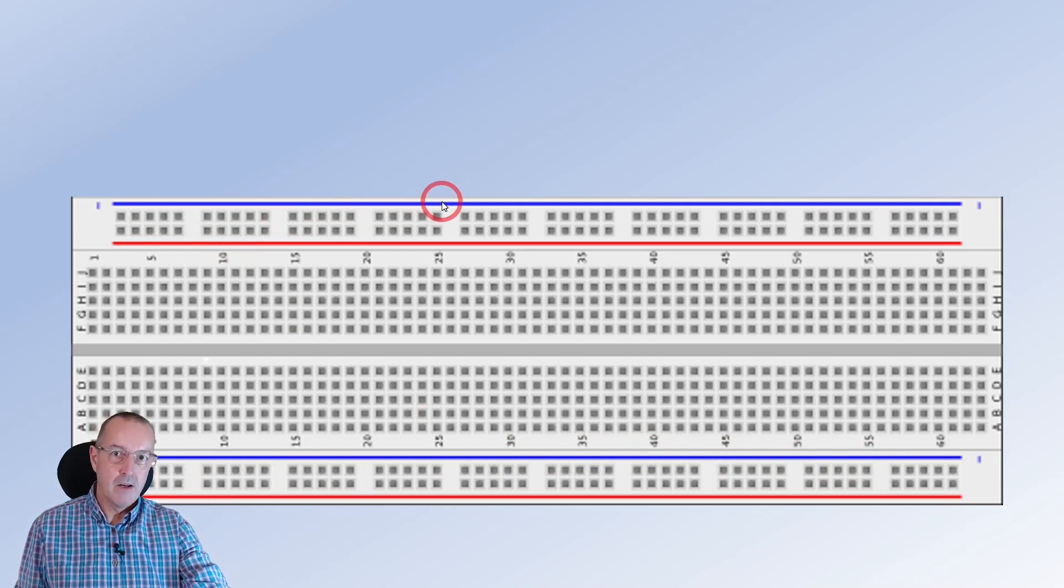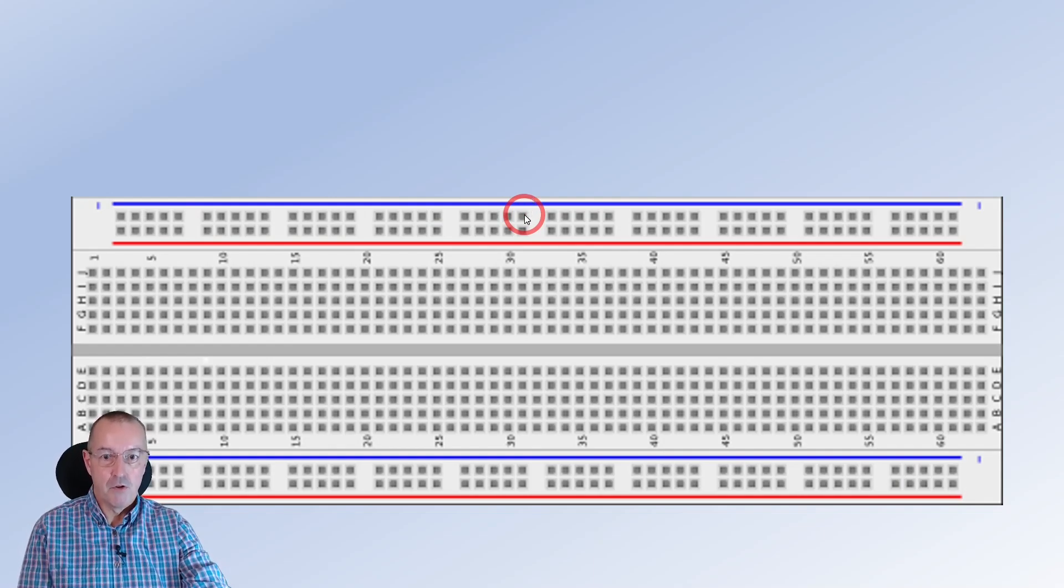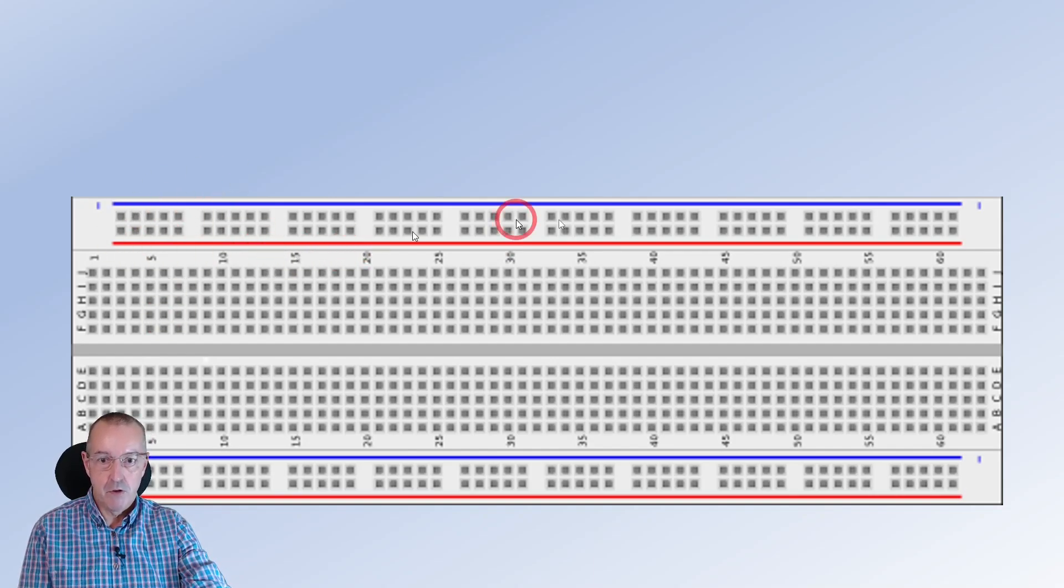So the blue line indicates that you would connect that to ground normally, you don't have to but it would help because it indicates that it's your negative or your ground rail and then the red line indicates that that would be your positive supply from your positive rail. So that might be a battery connection, it might be a power supply connection or whatever you're using.